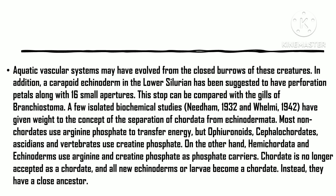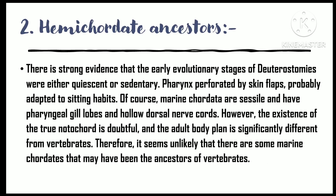Some isolated biochemical studies — Needham in 1932 and Velmy in 1942 — lend support to the concept of the derivation of chordates from echinoderms. Most non-chordates use arginine phosphate for energy transfer, but ophiuroids, cephalochordates, ascidians, and vertebrates use creatine phosphate. On the other hand, hemichordates and echinoderms use both arginine and creatine phosphate as the phosphate carrier. The descent of chordates from hemichordate ancestry.